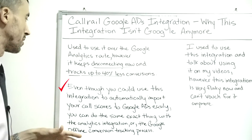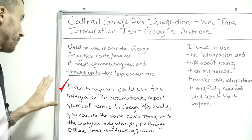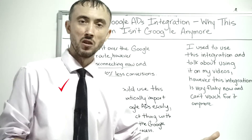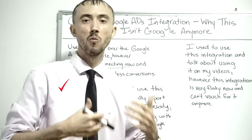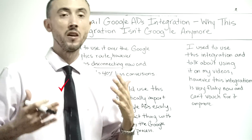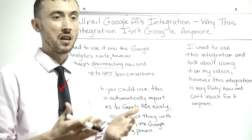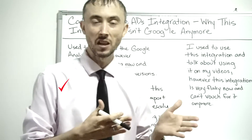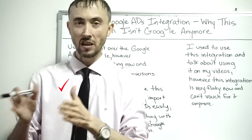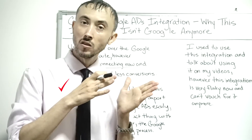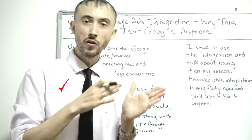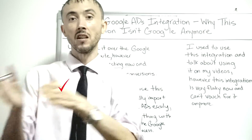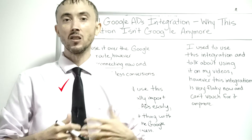There's no reason to use the CallRail to Google Ads integration, because everything you can do with it can also be done through the CallRail to Google Analytics integration, then using Google Analytics to pass that information to Google Ads. The only downside of the alternative route is that it's slightly more complicated to set up — routing all your data through Google Analytics first. But it's a one-time setup and then you're done.